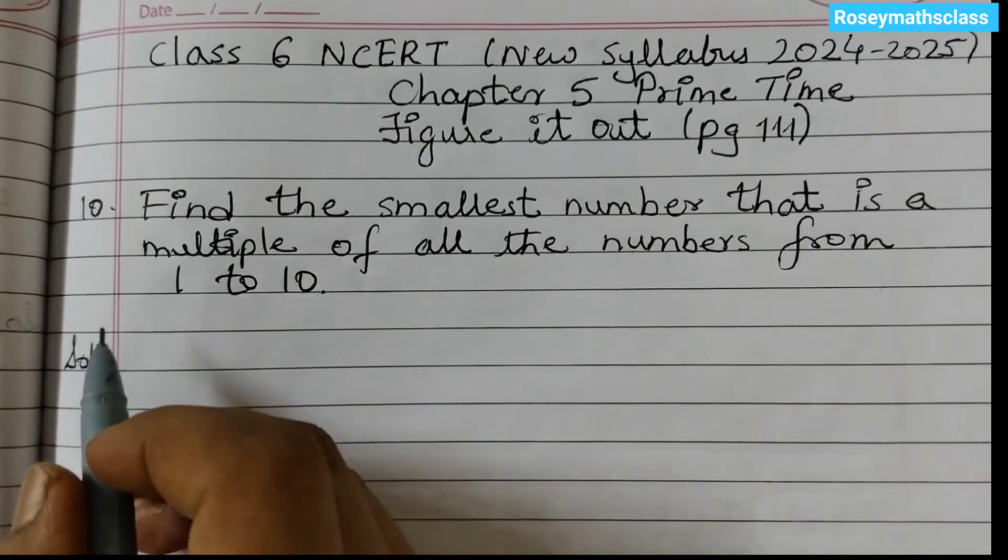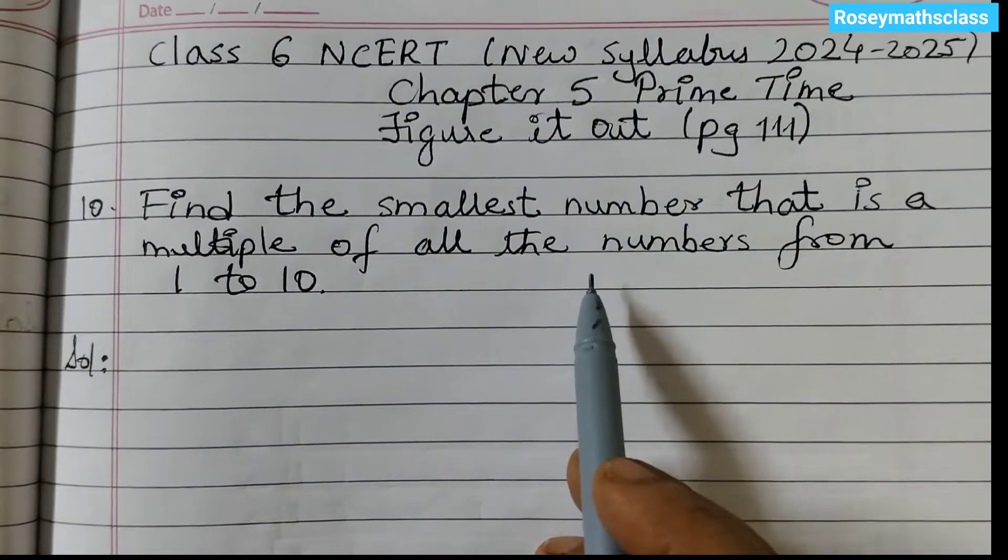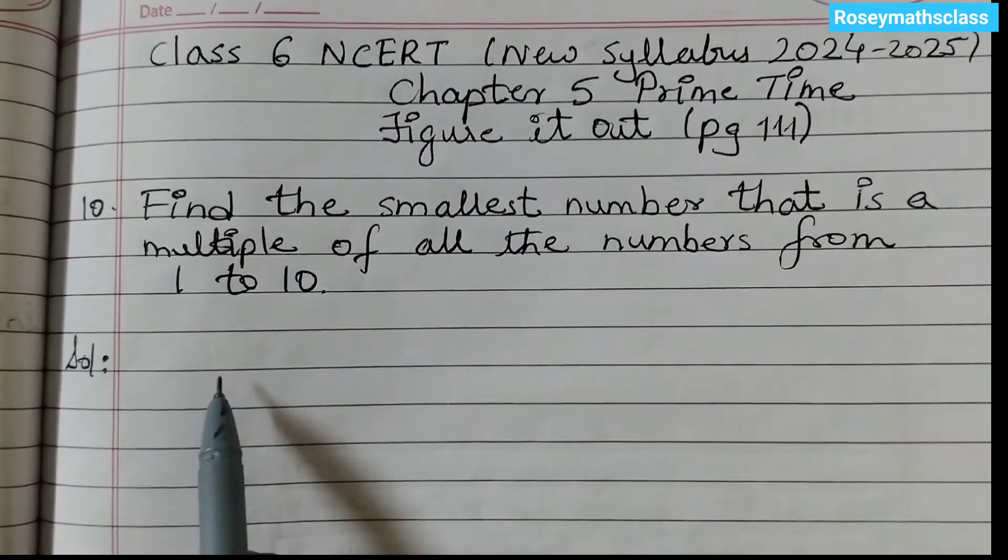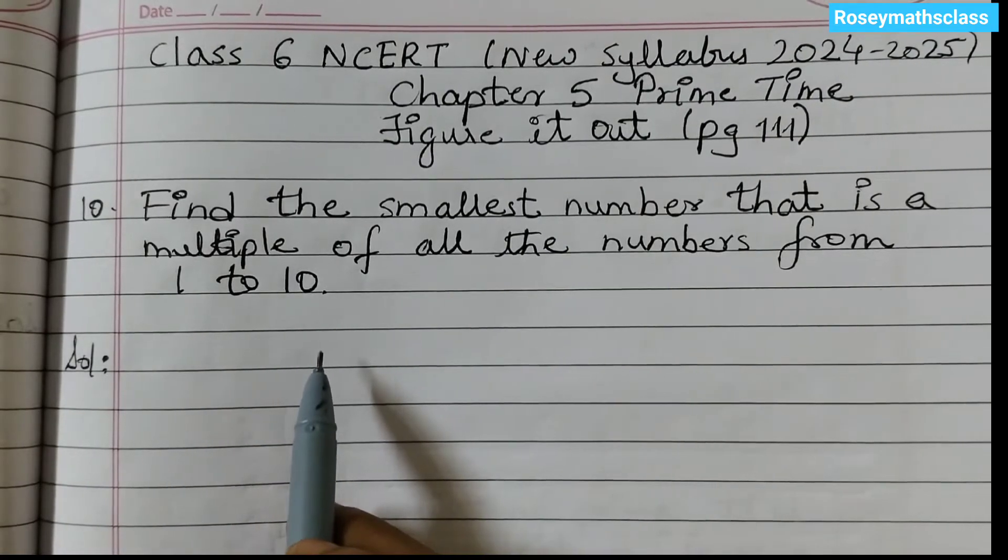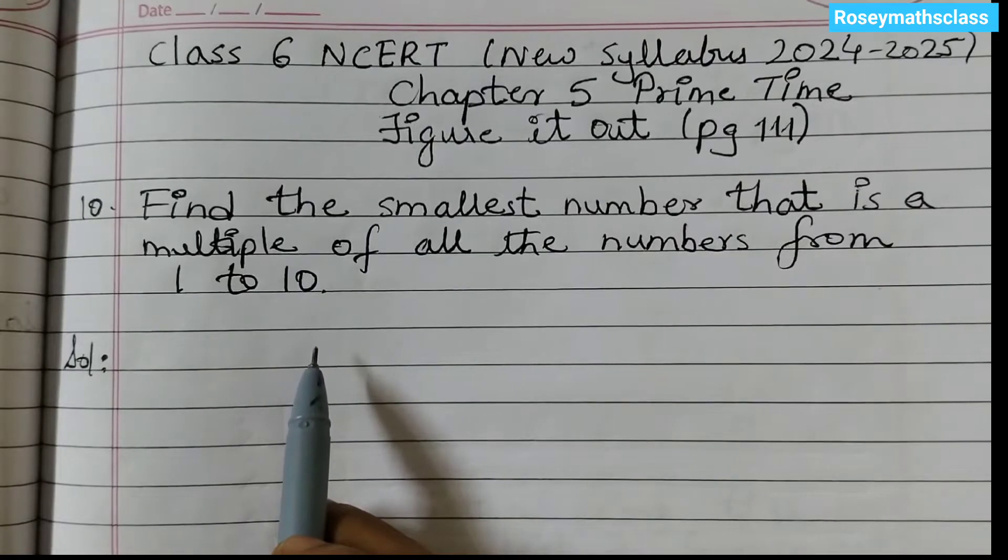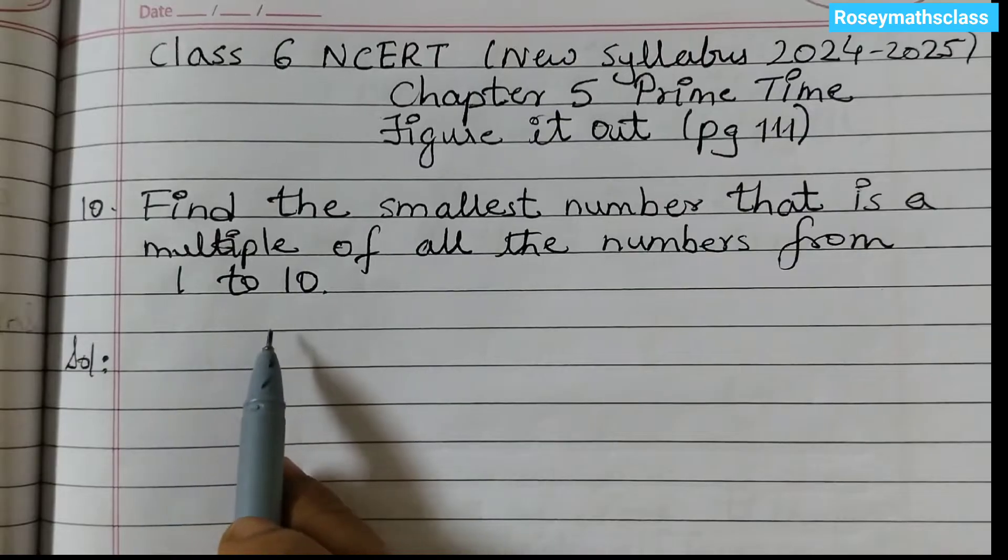Hello students, today we shall discuss question number 10 of chapter 5 Prime Time. Find the smallest number that is a multiple of all the numbers from 1 to 10. So basically we need to find the LCM, that is the least common multiple or the lowest common multiple of all the numbers from 1 to 10.